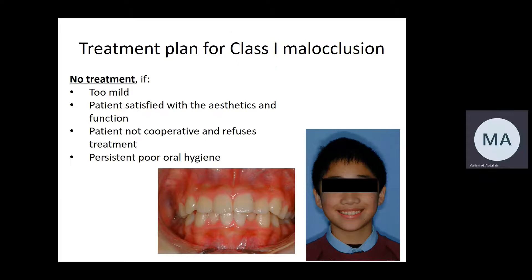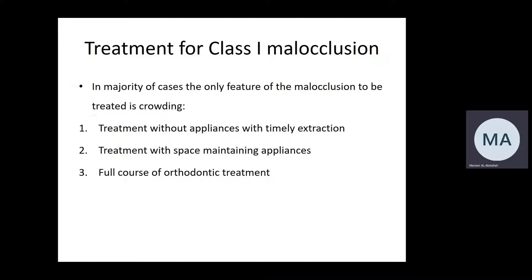When do we consider no treatment? First, if the case is too mild — class 1 malocclusion with mild crowding or mild spacing — we look at benefits versus risks, and if risks outweigh benefits, we offer no treatment. If the patient is satisfied with aesthetics and function, we offer no treatment. If the patient is not cooperative or refuses treatment, we depend on patient compliance. If the patient is not maintaining good oral hygiene, no treatment should be offered — this applies to all types of malocclusions.